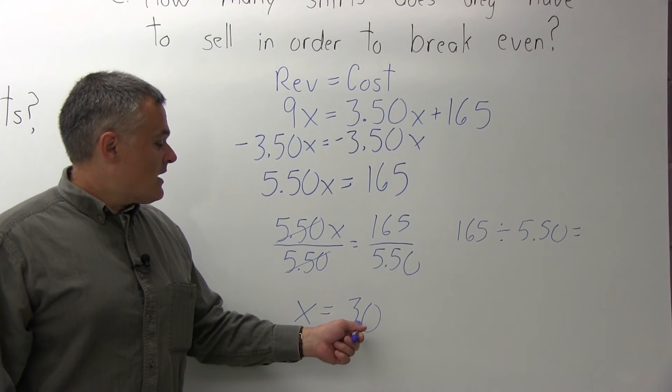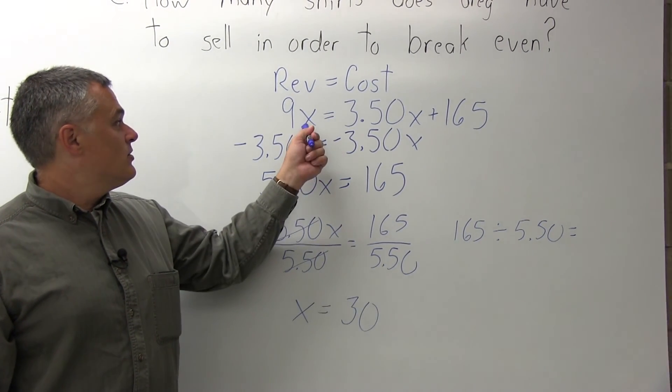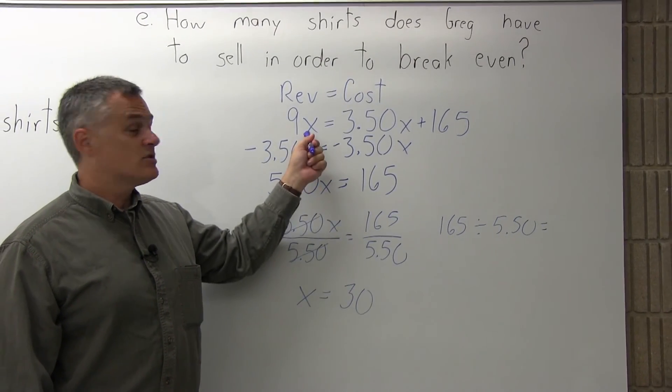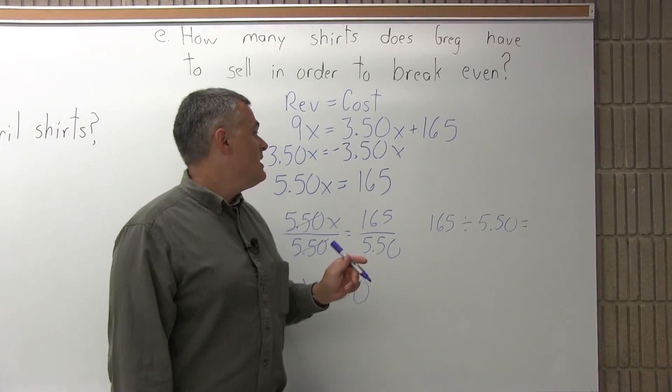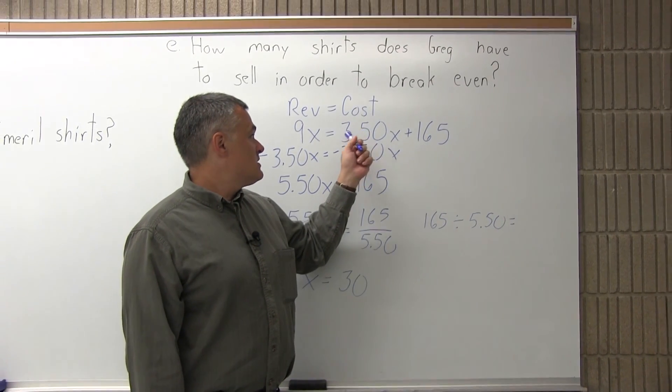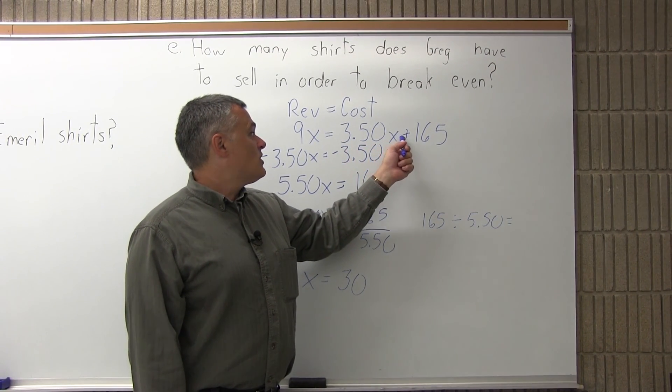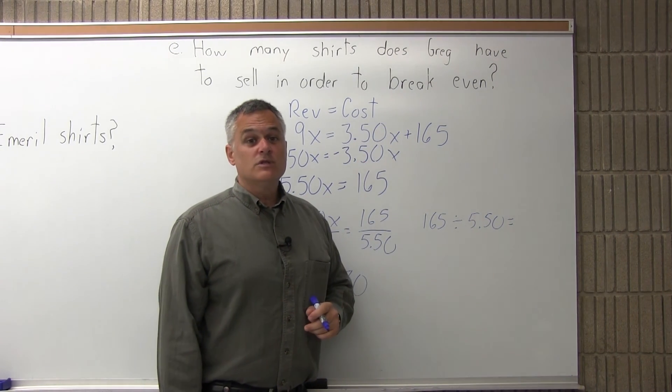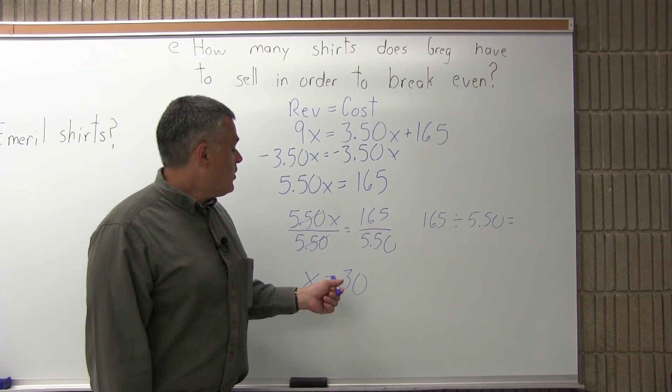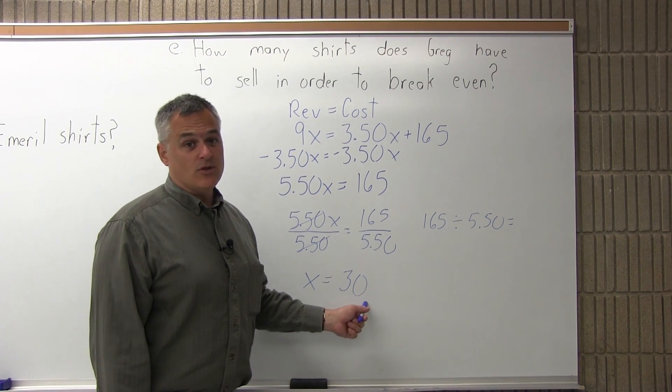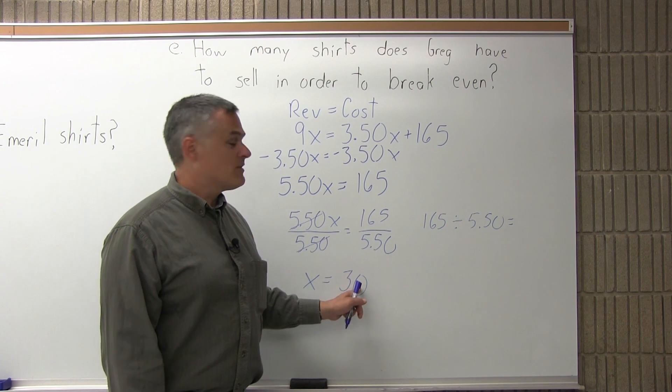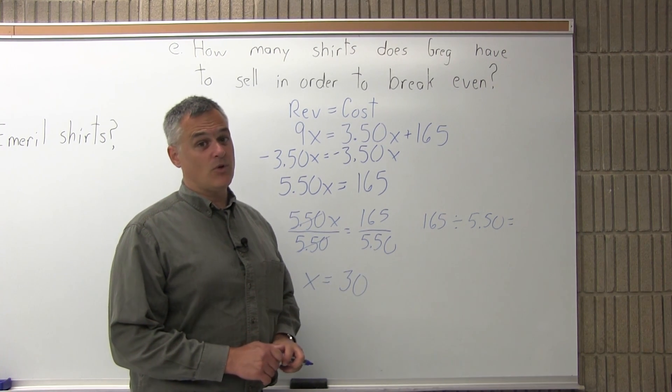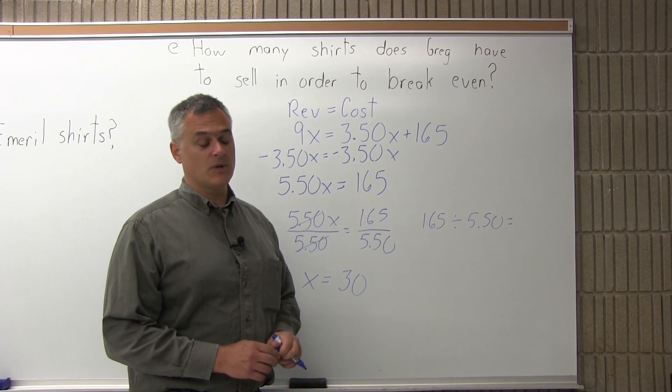And you can check that. If you sell 30 shirts, the revenue for making 30 shirts is 9 times 30, you have $270 of revenue. If you make 30 shirts, 3.50 times 30 plus 165, it does come out to also $270. So your goal is not to break even. You need 30 shirts to break even. Your goal is to make profit. So you have to be comfortable feeling that you can sell at least 30. More than 30 is what you're looking for. You don't want to break even. You want to make money.